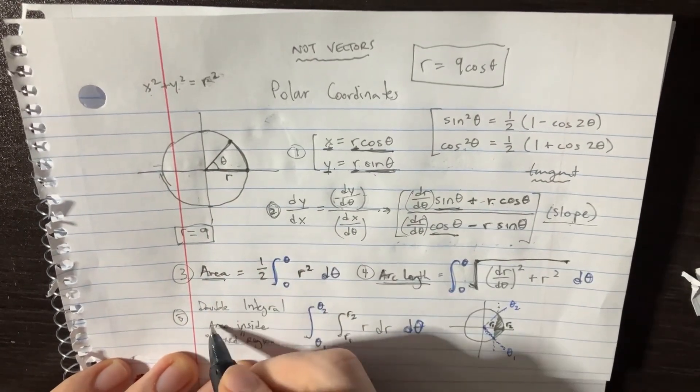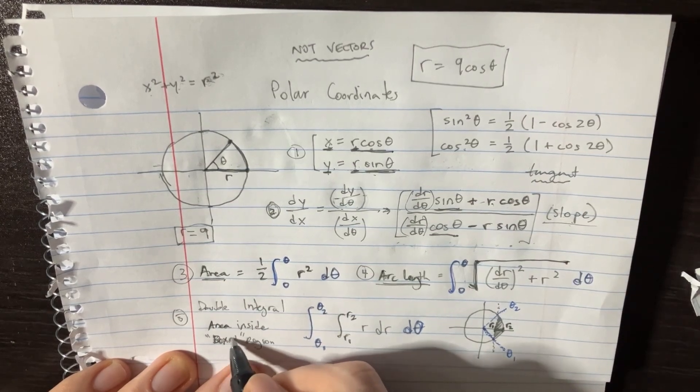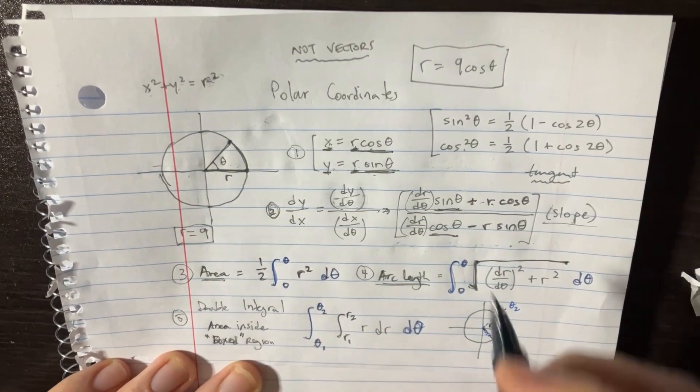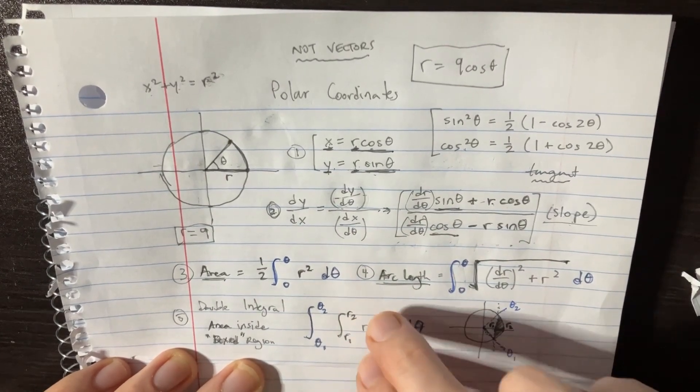Now the last thing we need to take a look at is going to be our double integral. Let's say you want to do an area inside of a box region. The box regions, what that means is you might have like an integral for the r region and then the theta region.